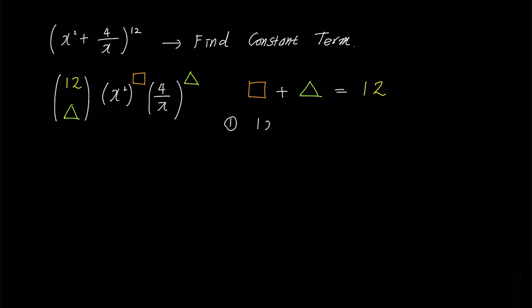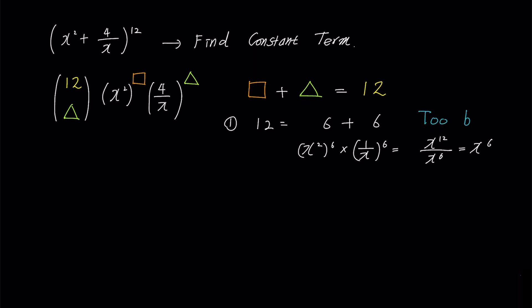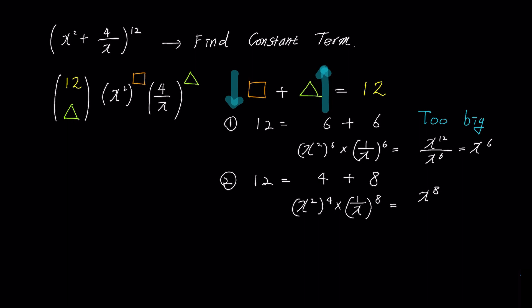There are different methods to solve this, but I usually try dividing the given exponent in half for both terms first, then adjust based on results. First, let's divide 12 into 6 and 6. The first term becomes (x^2)^6 and the second term becomes (1/x)^6, resulting in x^12 over x^6 overall — ignoring the 4 for convenience. Since we have x^6 more than needed, this is too big. We should decrease the value of square and increase triangle. Let's split 12 into 4 and 8. This time it becomes (x^2)^4 and (1/x)^8, resulting in x^8 in both numerator and denominator, which means x disappears.